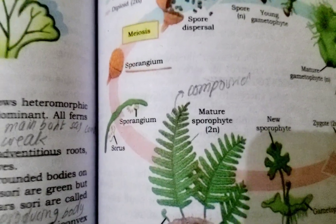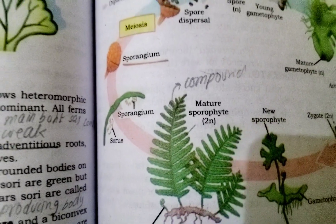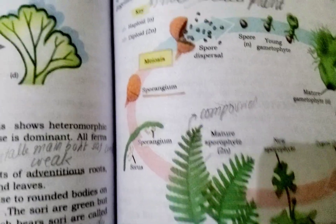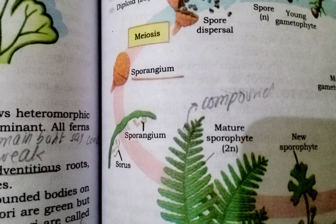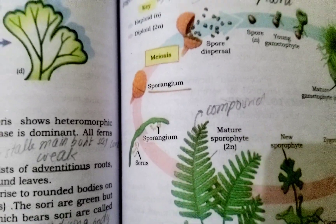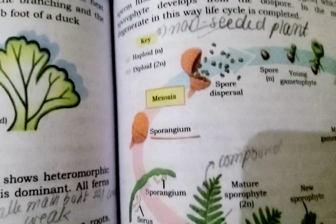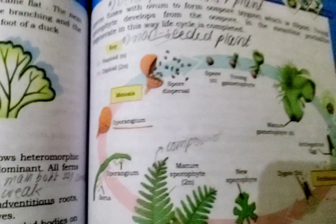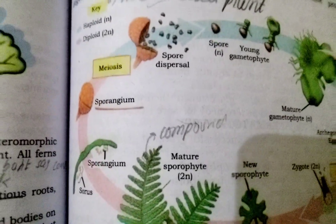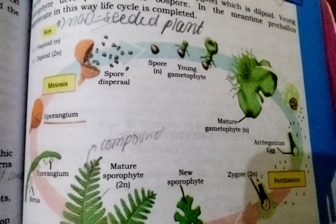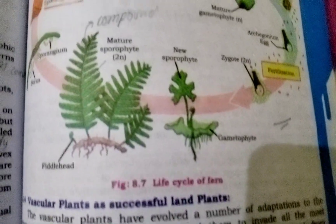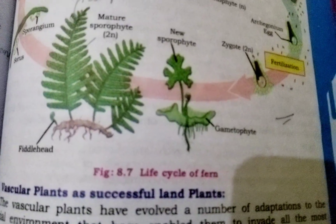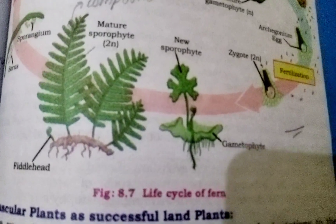Then the sori and sporangia form, which consist of annulus and stomium walls. This capsule undergoes meiosis, which converts the contents into spores. This is the complete cyclic process representing the life cycle of ferns.